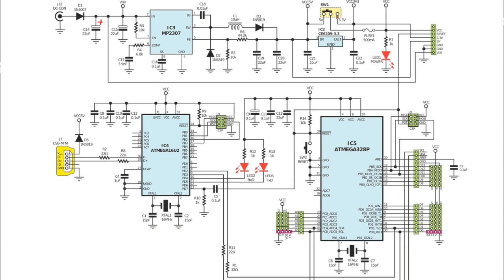Here we have a connector with VCC, Reset, and 3.3 volts generated here. From the switch we have 5 volts. This IC generates 5 volts through this pin, through this resistor, and all these components going directly to this connector.